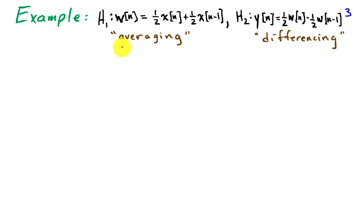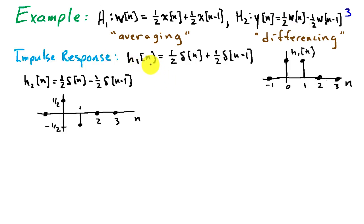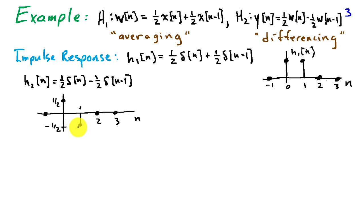We'll consider the cascade combination of an averaging system, which computes its output w as the average of the two most recent inputs, and a differencing system, which computes its output as the difference of the two most recent inputs. The impulse response for h1, applying delta of n for x of n, is 1/2 delta of n plus 1/2 delta of n minus 1, as shown in the graph. Similarly, the differencing system has impulse response 1/2 delta of n minus 1/2 delta of n minus 1, with values 1/2 at n equals 0 and minus 1/2 at n equals 1, and 0 elsewhere.